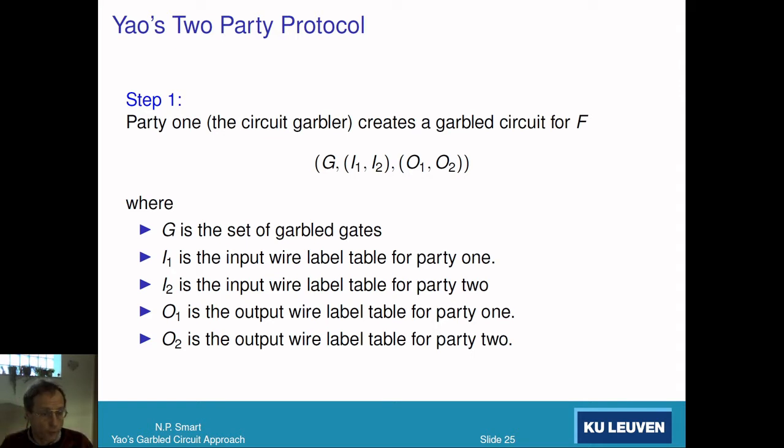The first step is that the garbler is going to garble the circuit. They produce the set of garbled gates G, and they produce two input wire tables I1 and I2. These are for each of the input wires - the two labels corresponding to whether that wire is 0 or 1. We do that for the input wires and also for the output wires for both parties.